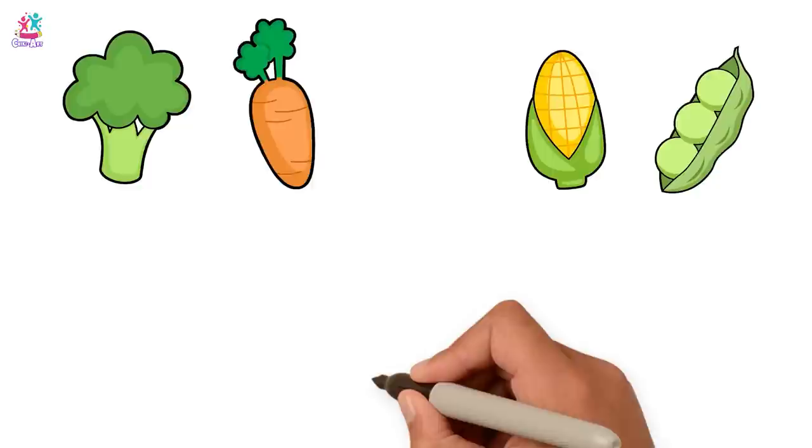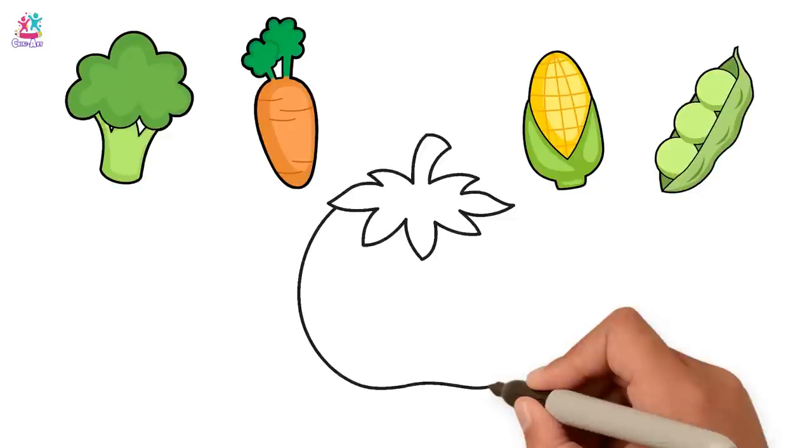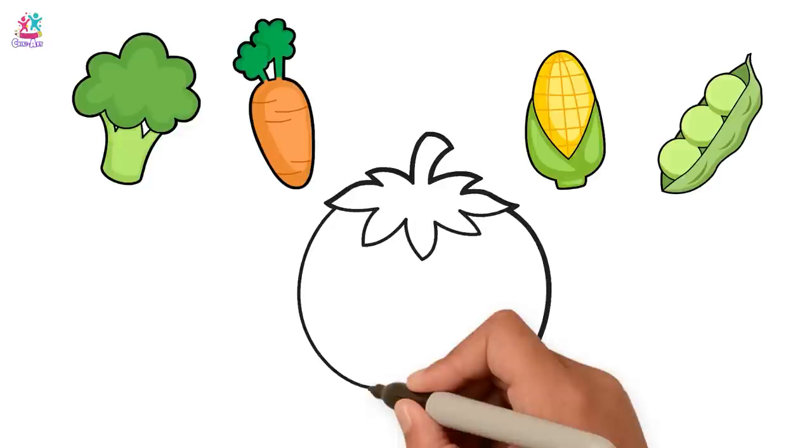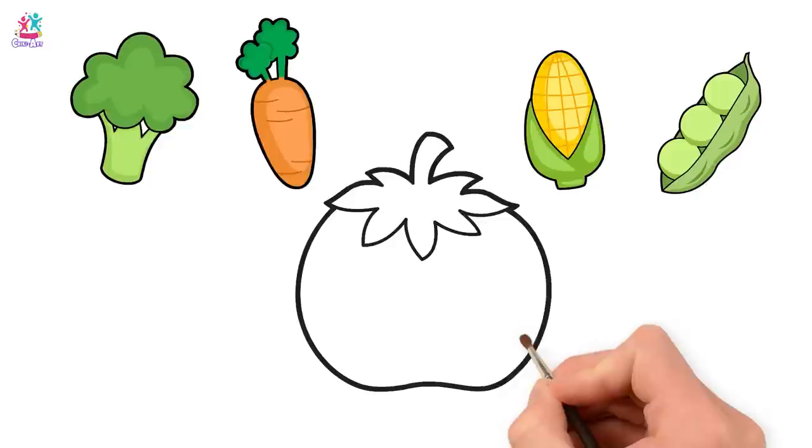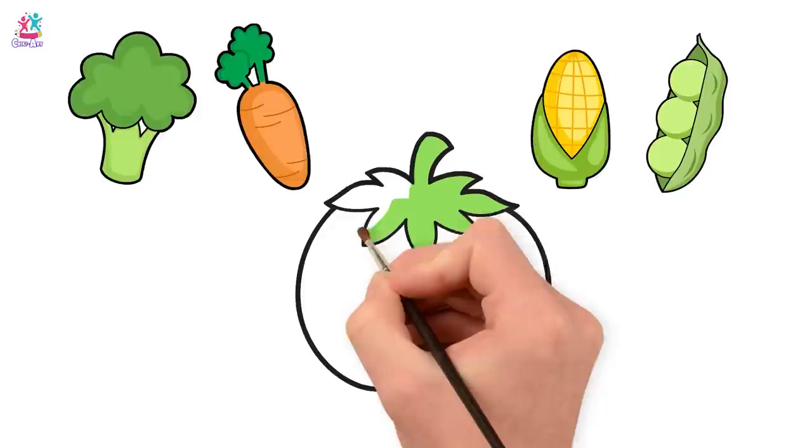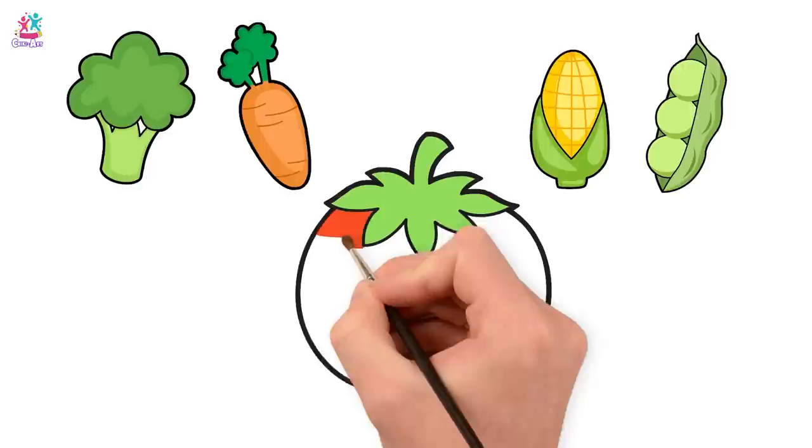Next is a tomato. Yes, this looks like a tomato. Green for the leaf. And red for the tomato.